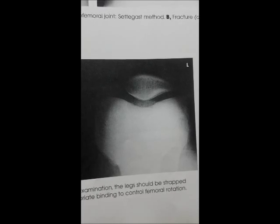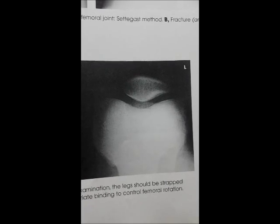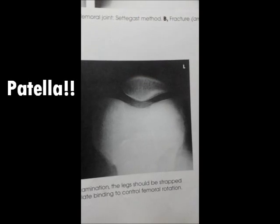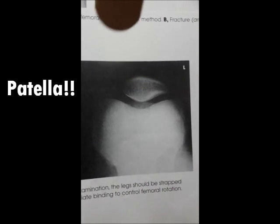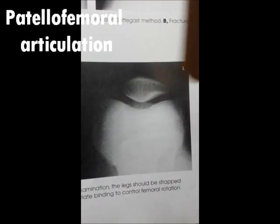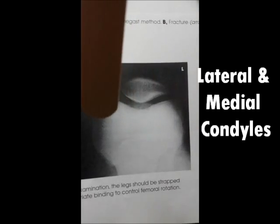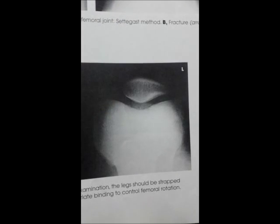Structures shown for the tangential projection of the patella include the patella, the patellofemoral articulation, and the lateral and medial condyles.